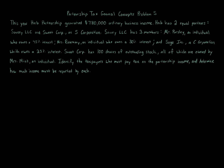This is a pretty straightforward problem. It's all about understanding the structure in terms of an entity owning another entity, then going through and answering what portion does each get using the percentages. Before we jump into the numbers and answer the question — identify the taxpayers who must pay tax on the partnership income and determine how much income must be reported — let's talk about the entity structure.